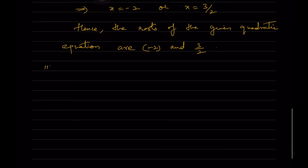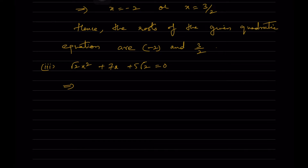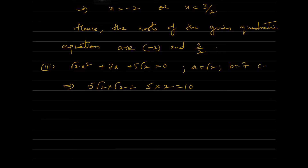The third one: √2·x² + 7x + 5√2 = 0. Here a = √2, b = 7, c = 5√2. We compute ac = √2 × 5√2 = 5 × 2 = 10. We need factors of 10 that add up to 7, which are 5 and 2.